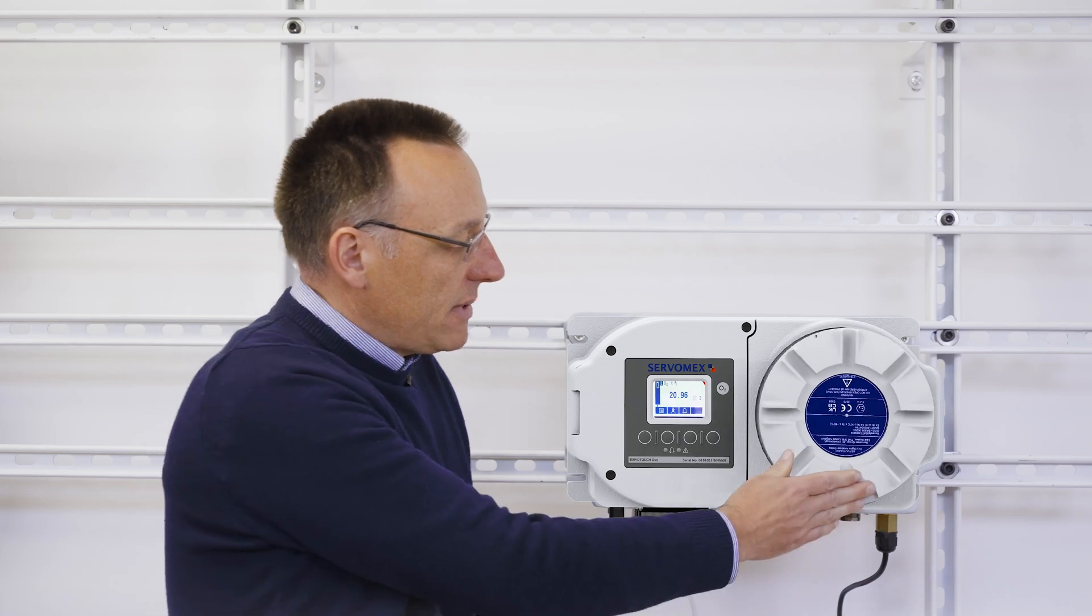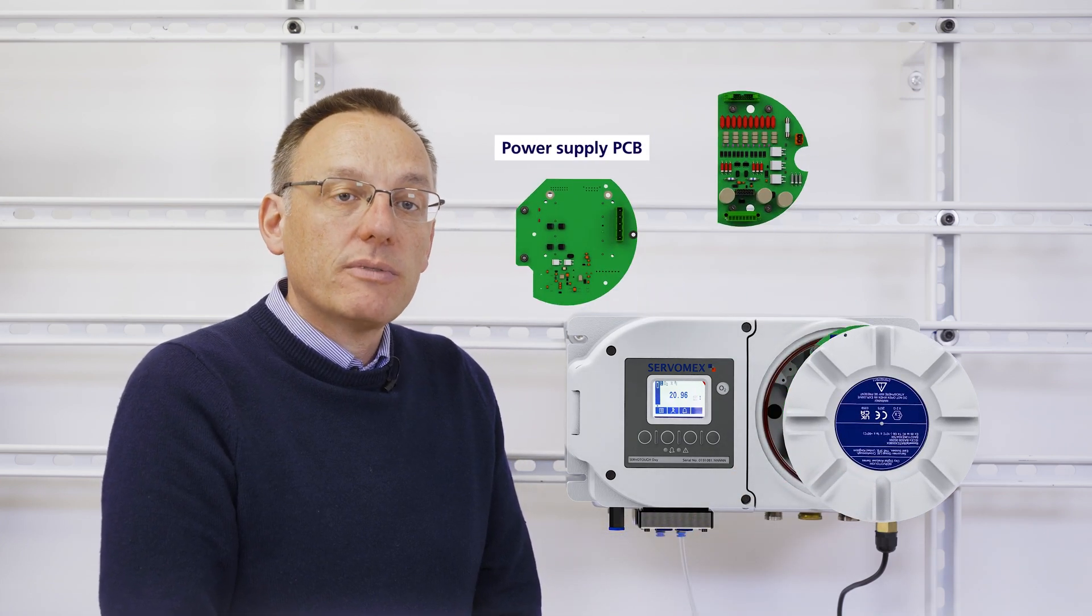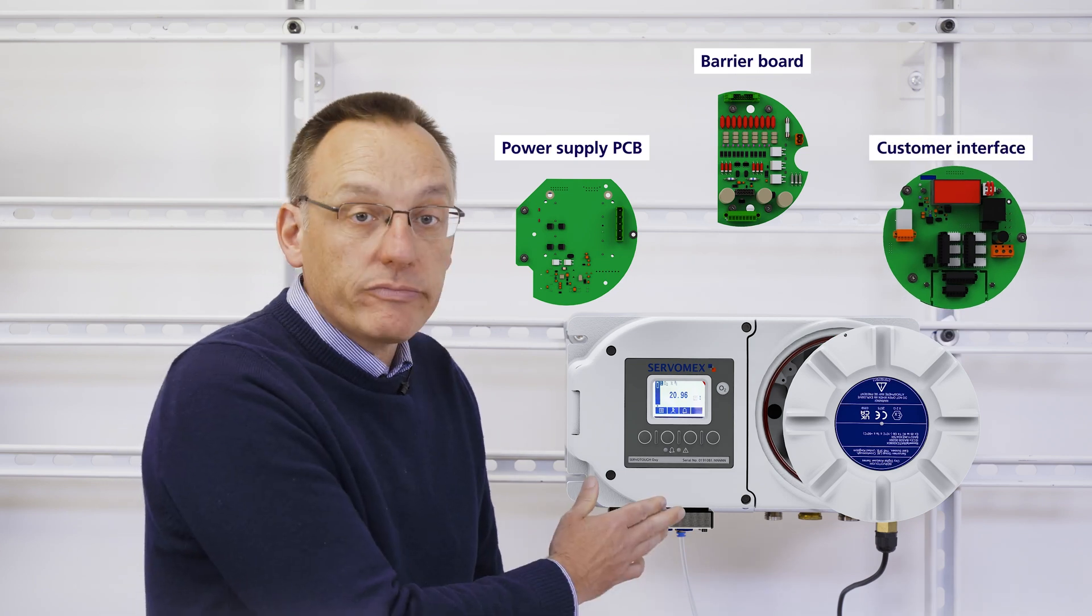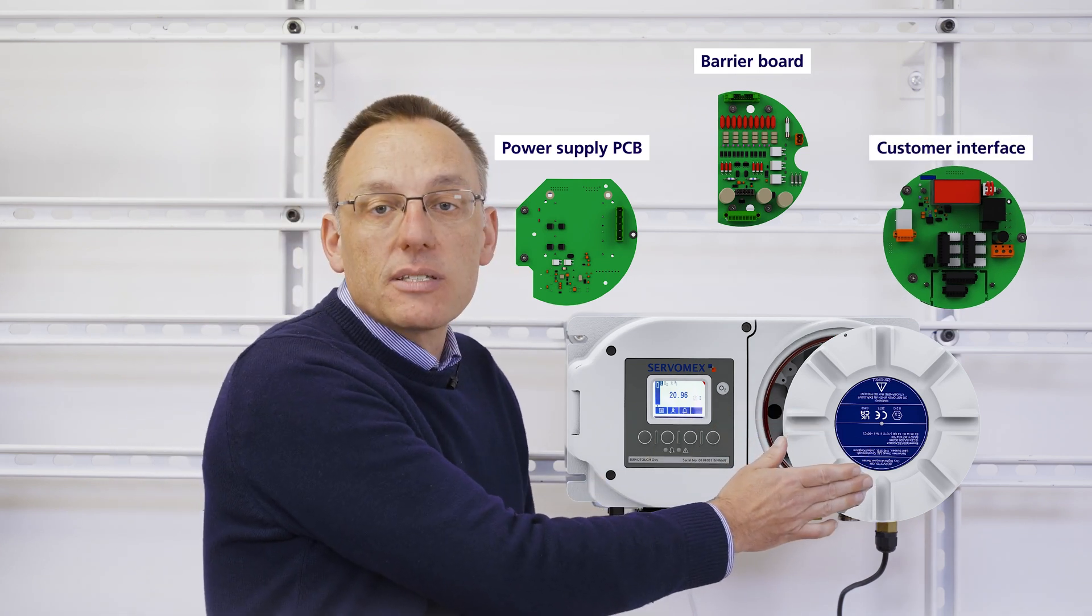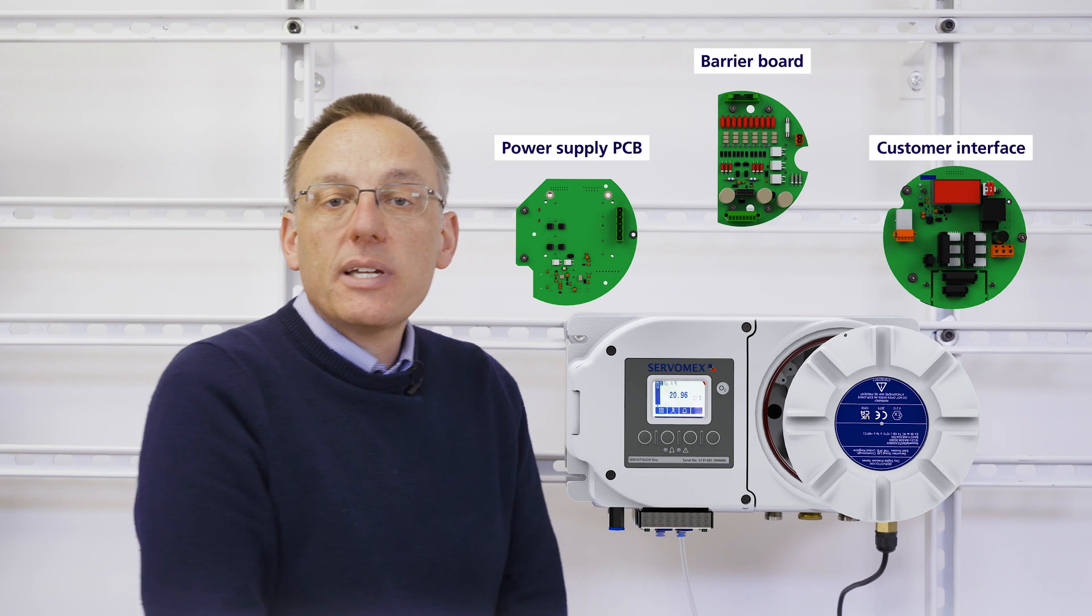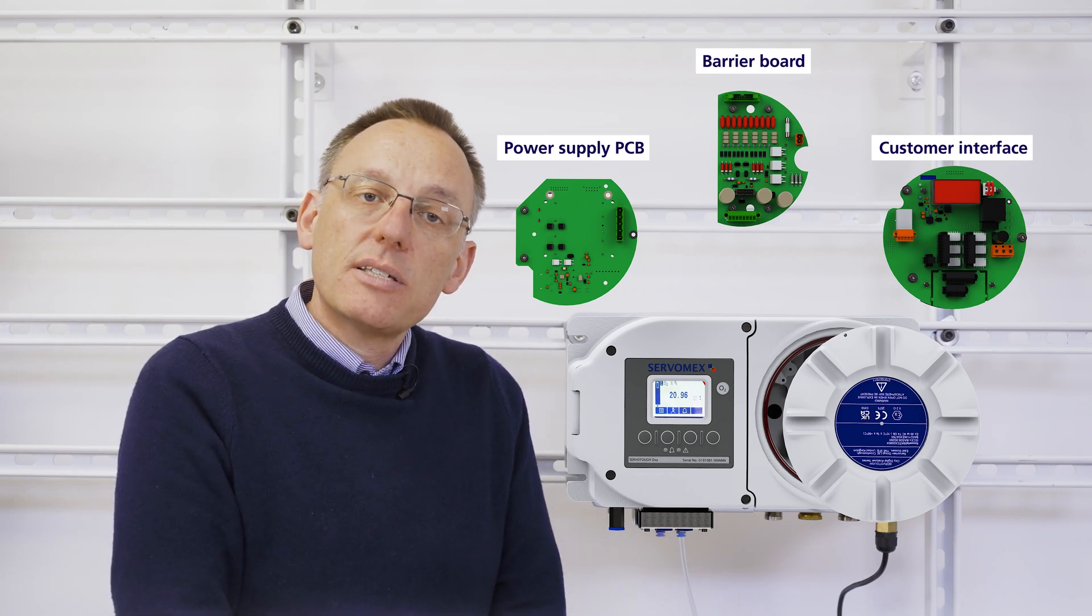The EXD compartment houses the internal power supply and the barrier protection board for the intrinsically safe section and also it houses the customer interface board with connections to interface to the site DCS.